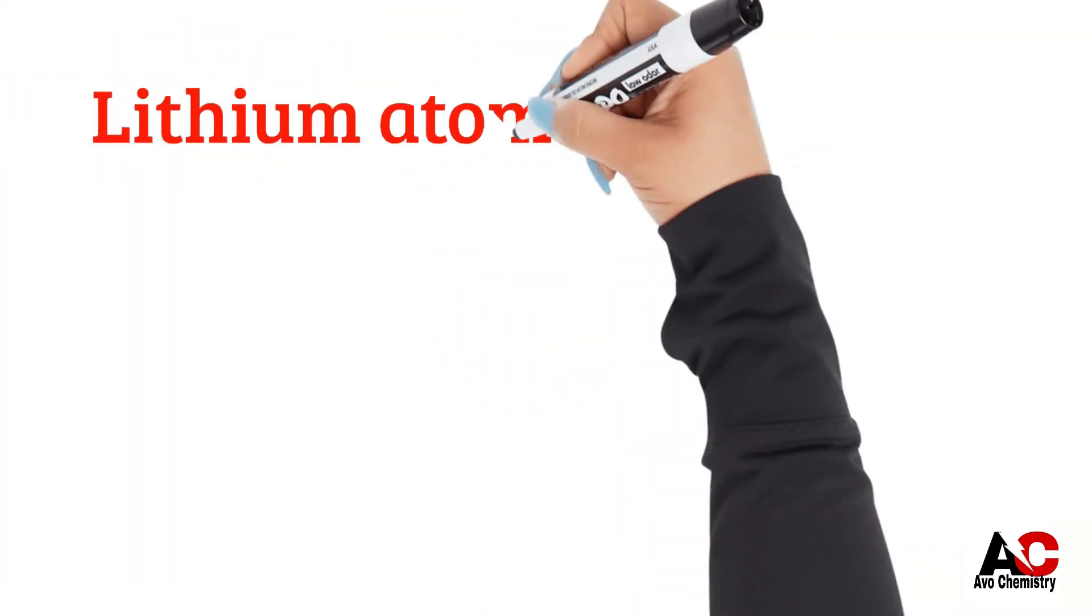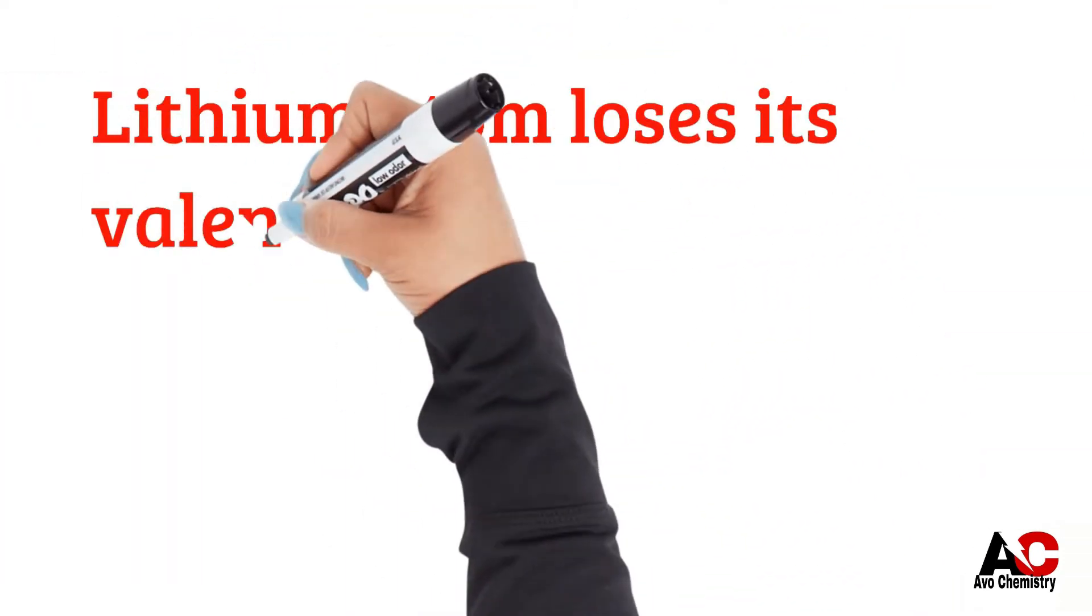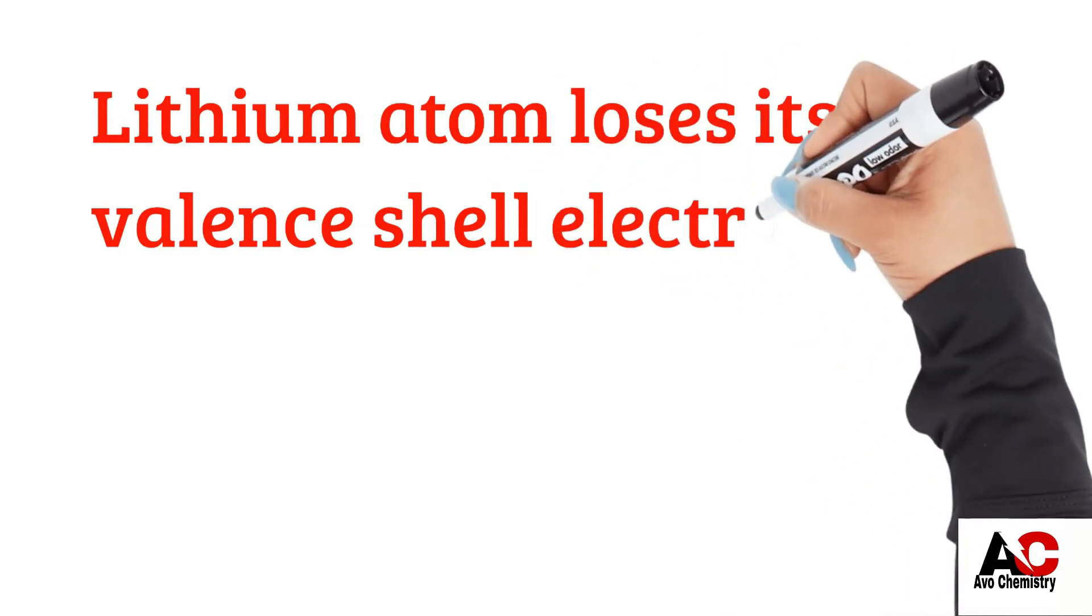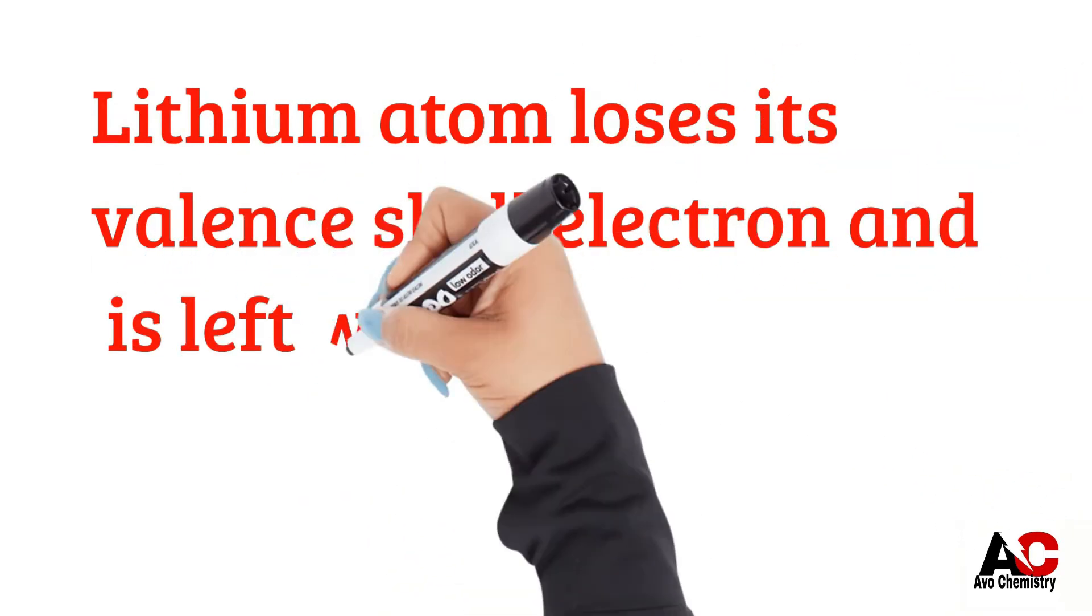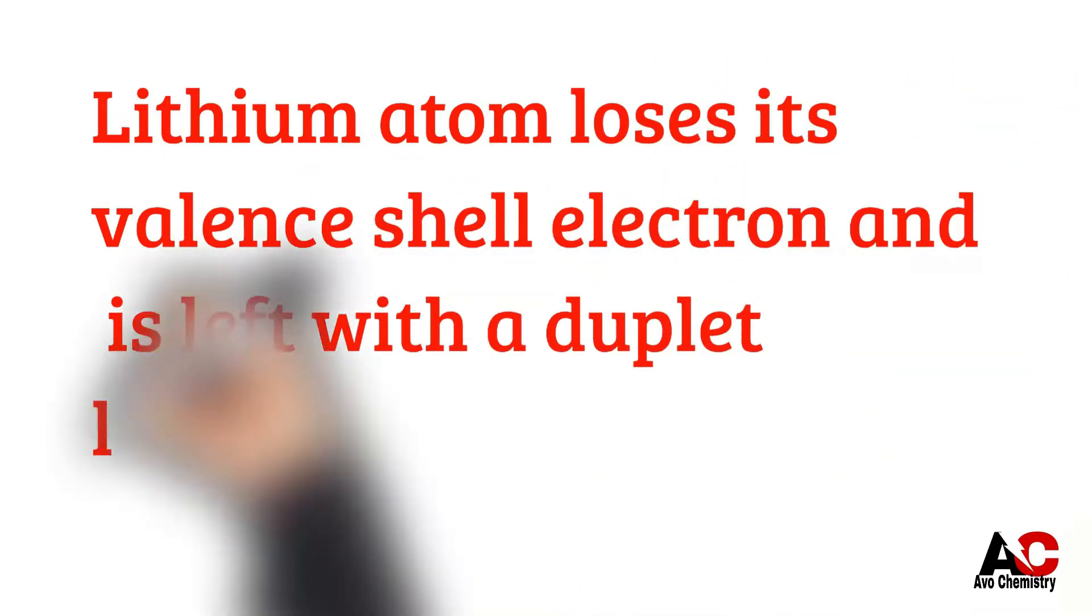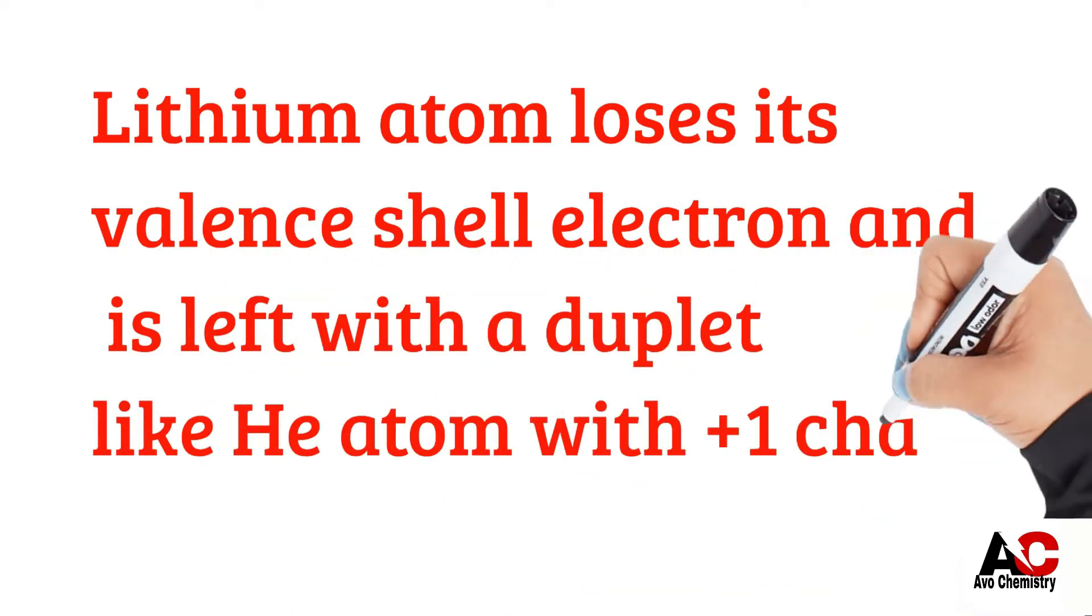Lithium atom loses its valence shell electron and is left with a duplet like helium atom with plus 1 charge.